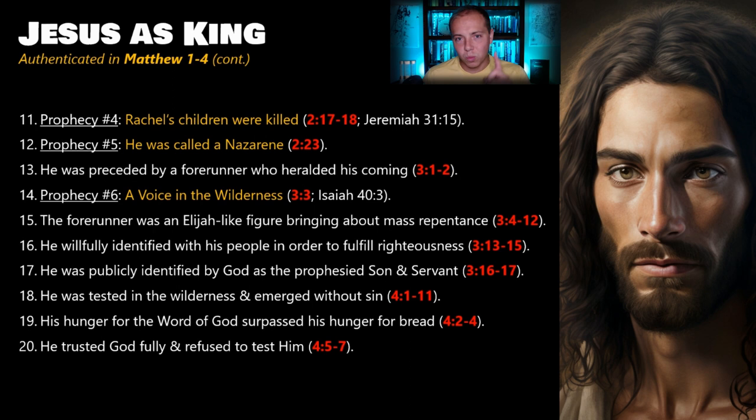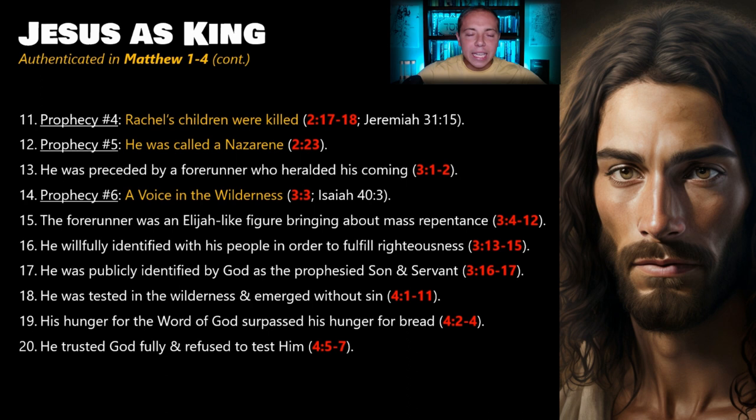John the Baptist shows up on the scene. He goes to the place where Elijah was last seen, dresses the way Elijah dressed, says the things Elijah says, and does the things the prophet said Elijah would do. Then Jesus shows up on the scene. As a Jewish reader, you're saying: he has the right credentials, he has the right forerunner, he's doing all the right things, he is being heralded as a king. The question becomes: does this king have the right character to be the Messiah? Matthew's answer is absolutely yes.